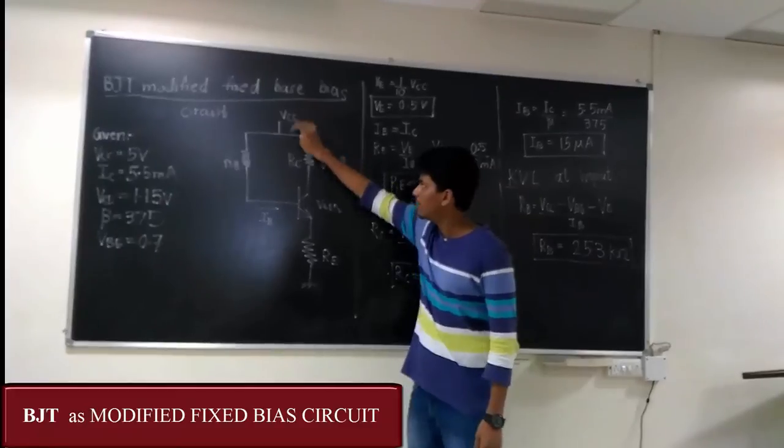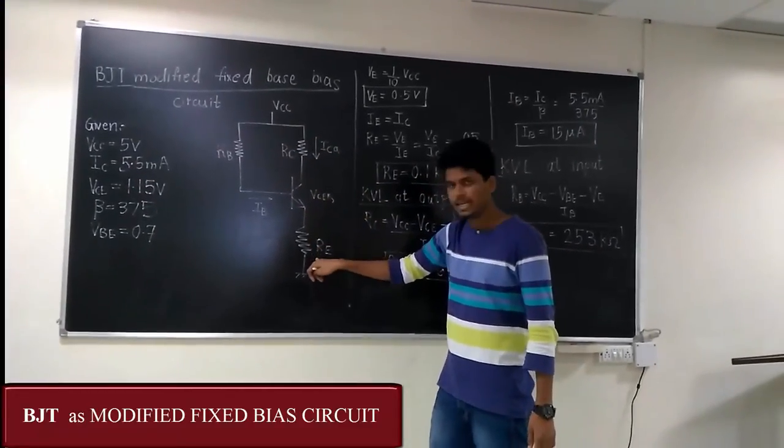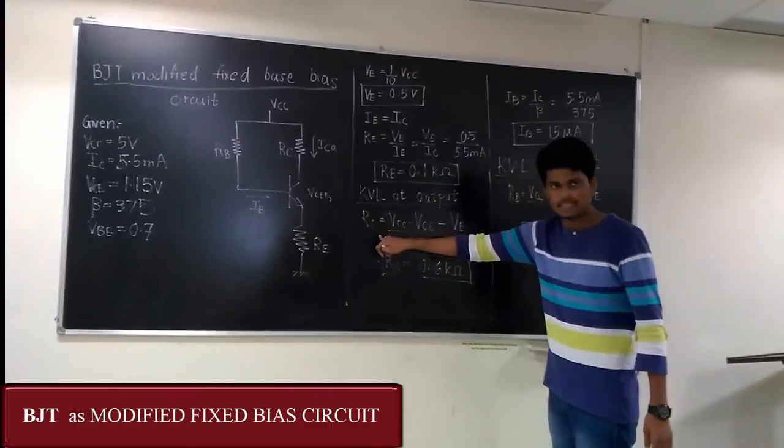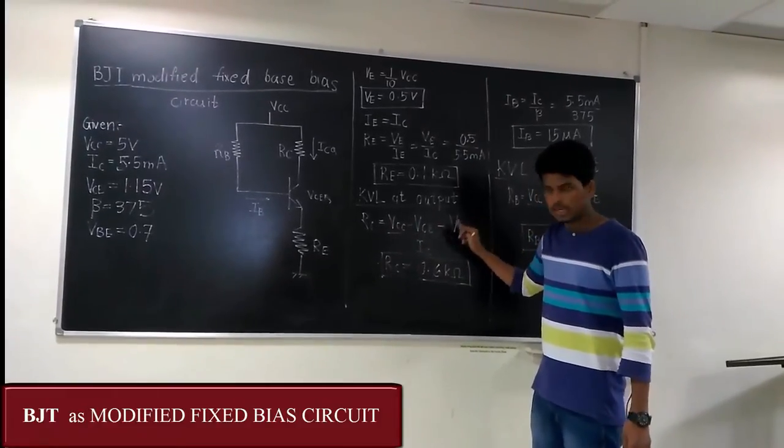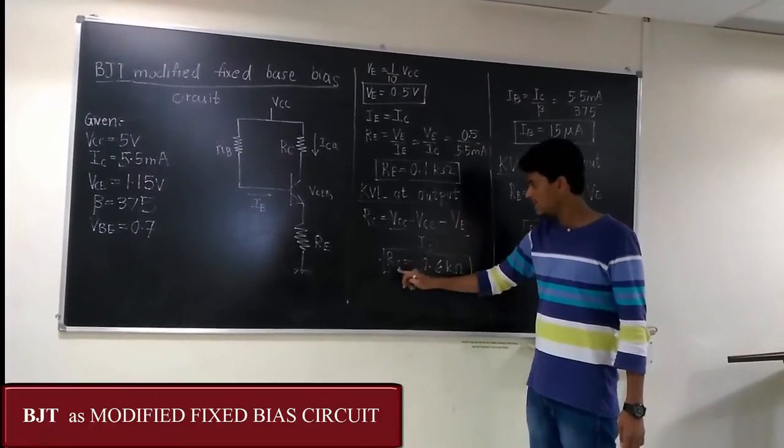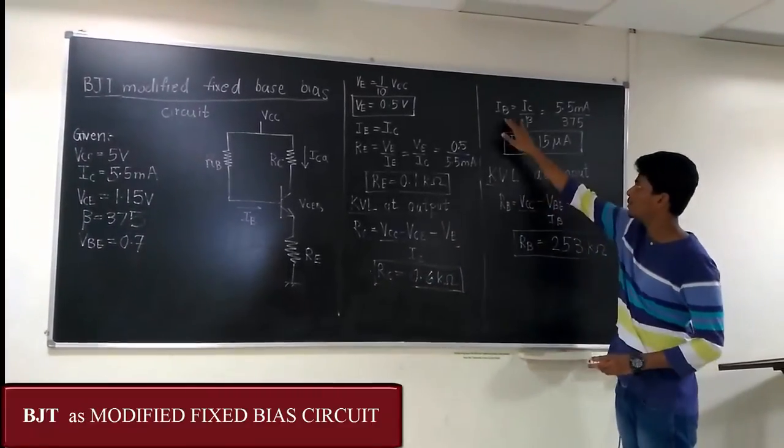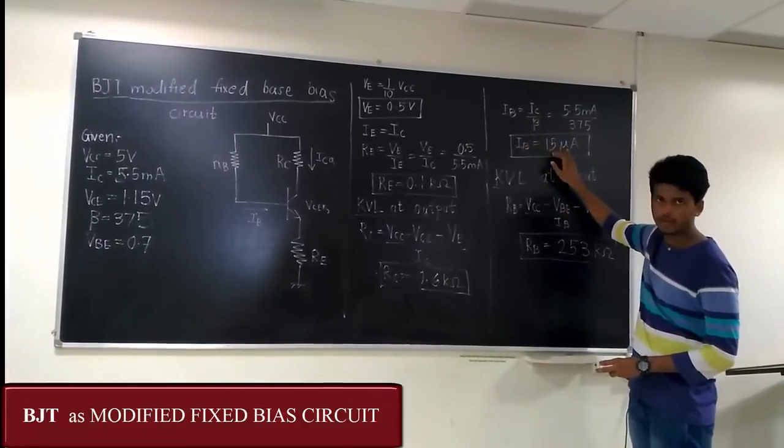Now, applying KVL at the output, we get VCC minus IC*RC minus VCE minus IE*RE is equal to 0. IE*RE is VE. That gives us RC is equal to VCC minus VCE minus VE upon IC. That is RC is equal to 0.6 kilo ohm. That gives us IB is equal to IC upon beta. IB value is equal to 15 microamp.